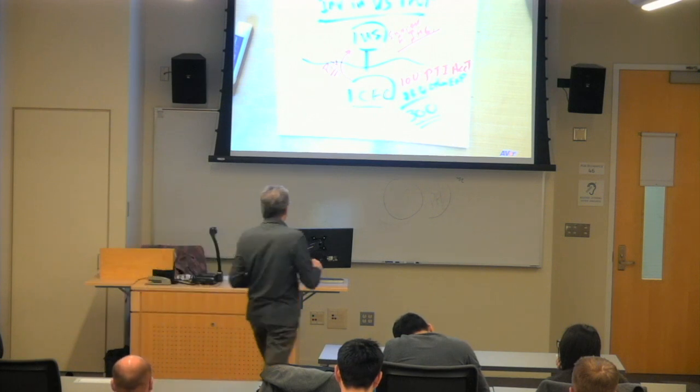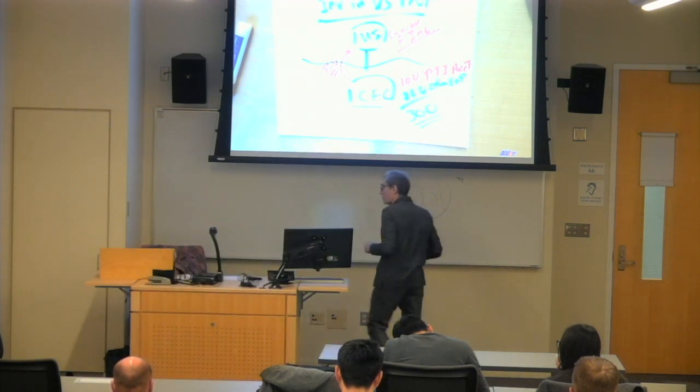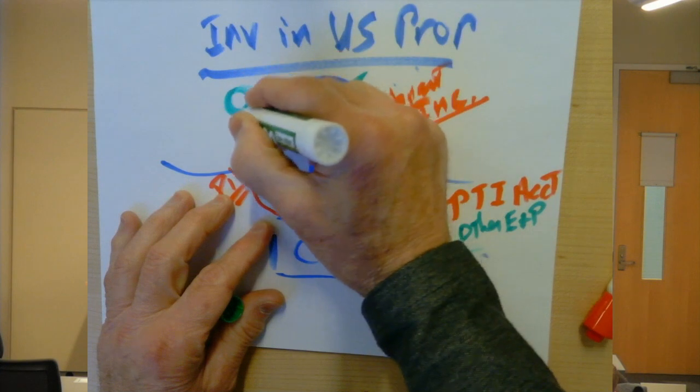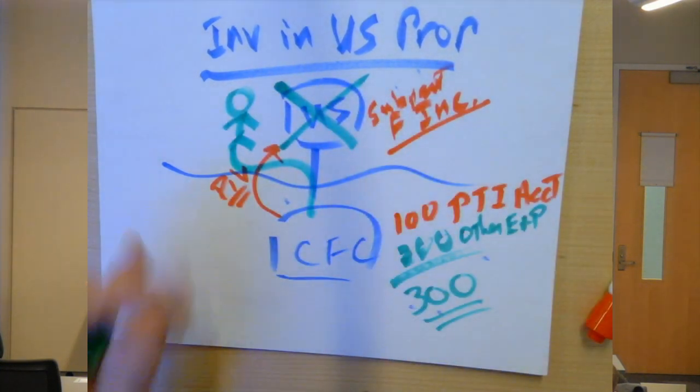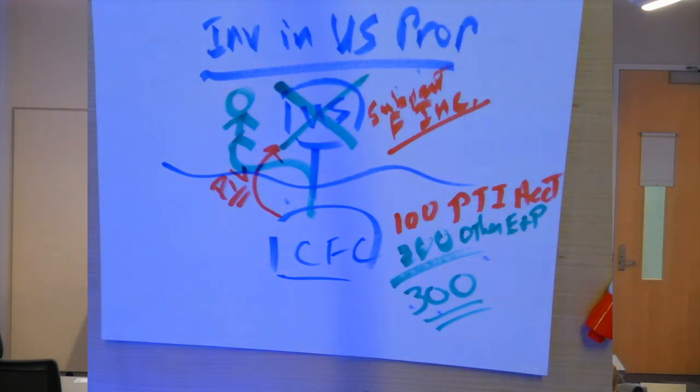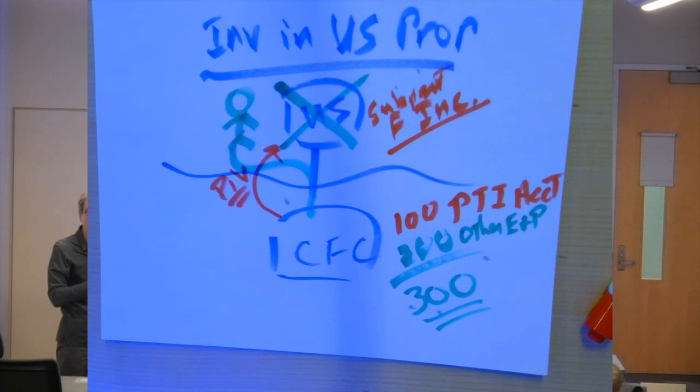But as I've commented once or twice, if we have an individual who was the owner of this CFC, and we'll get into more details very quickly, that individual does not get the benefit of the participation exemption. That individual will be fully taxable on any dividend out of that 200 of other E&P.